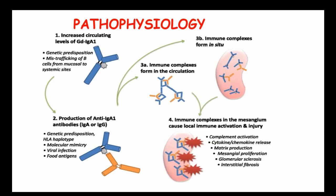When these immune complexes go to the kidney, they cause local immune activation and injury of the mesangium. This can occur because of complement activation, cytokine or chemokine release, matrix production, mesangial proliferation, glomerular sclerosis, and interstitial fibrosis, all of which at the end lead to kidney injury.